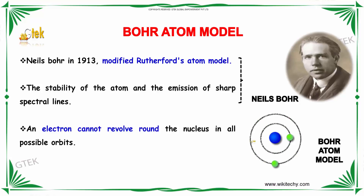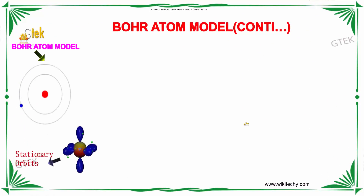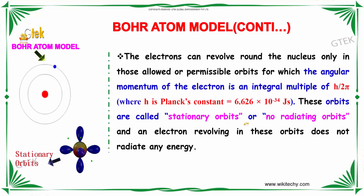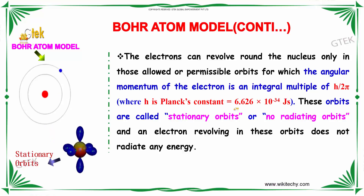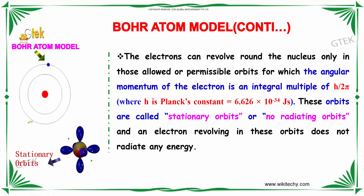An electron cannot revolve around the nucleus in all possible orbits. According to Bohr's atom model, the electrons can revolve around the nucleus only in those allowed or permissible orbits for which the angular momentum of the electron is an integral multiple of h by 2 pi, where h is Planck's constant, equivalent to 6.626 into 10 power minus 34 joules. These orbits are called stationary orbits or non-radiating orbits, and an electron revolving in these orbits does not radiate any energy.